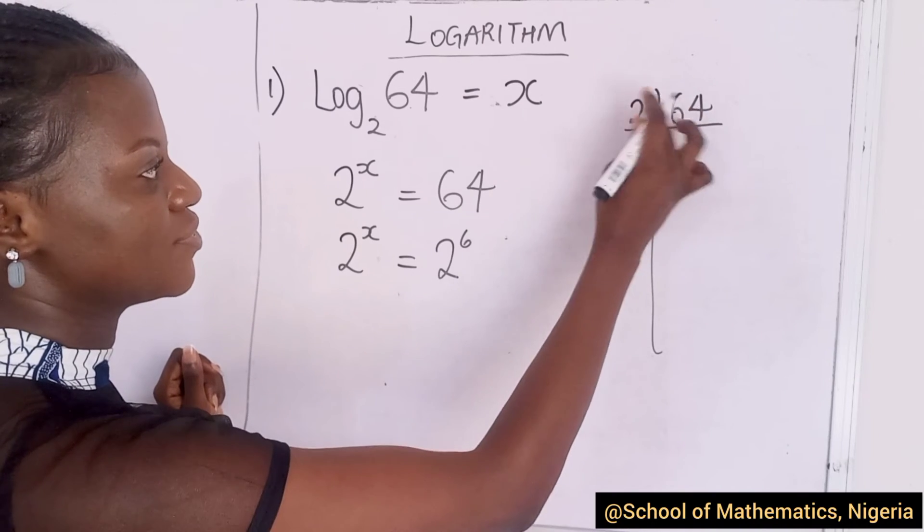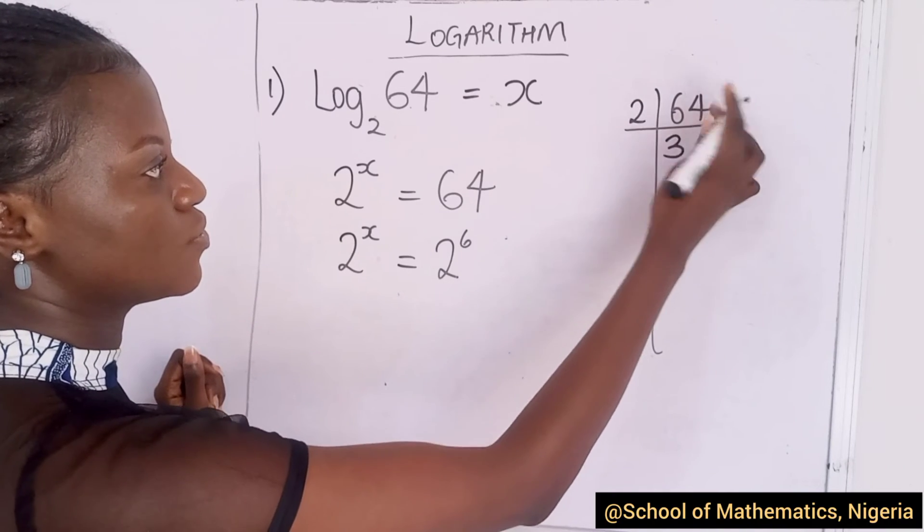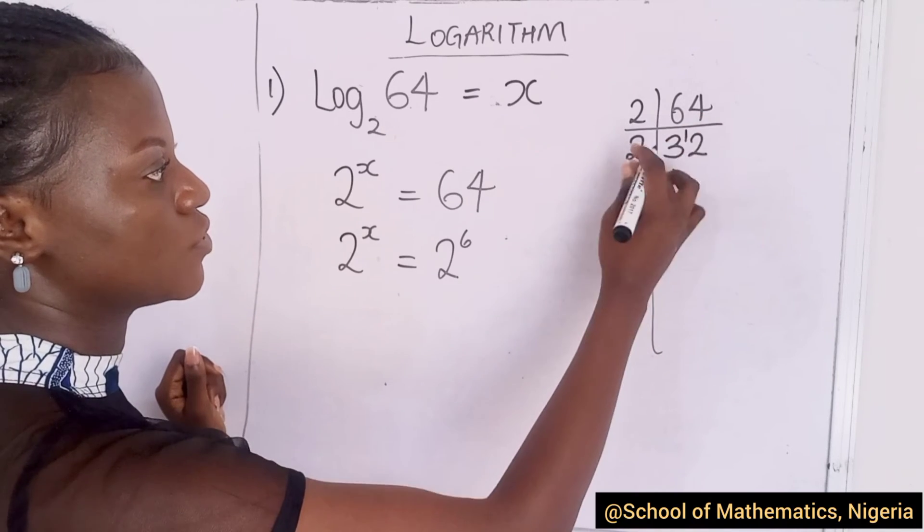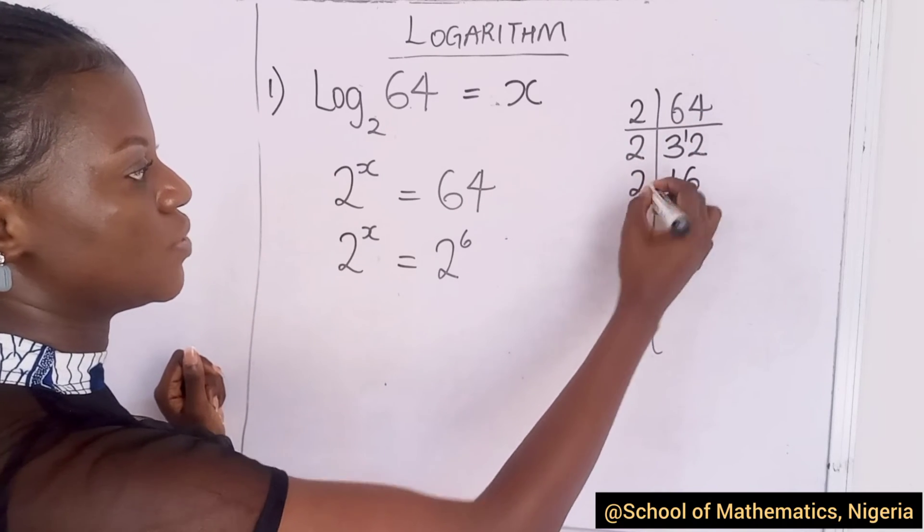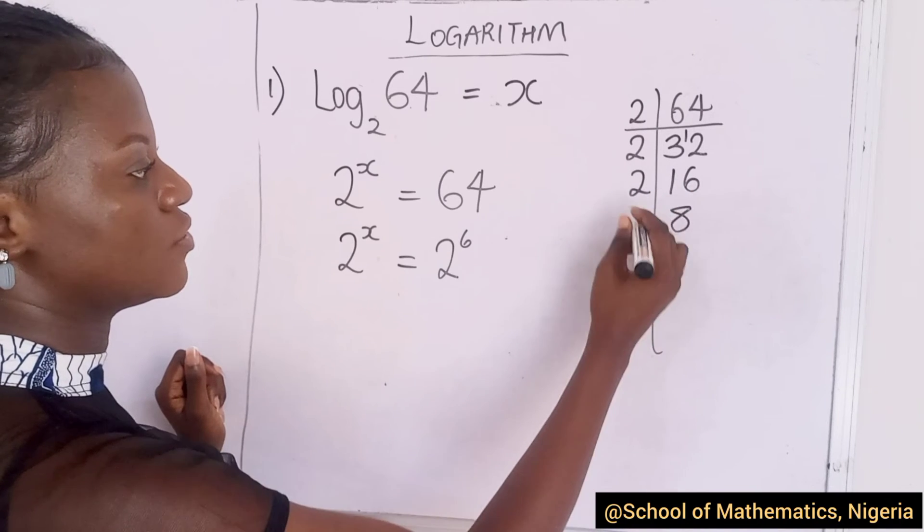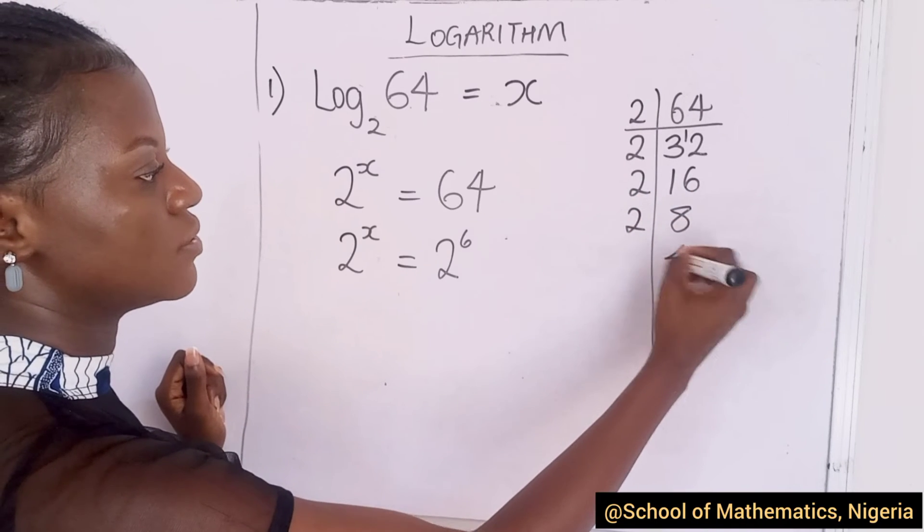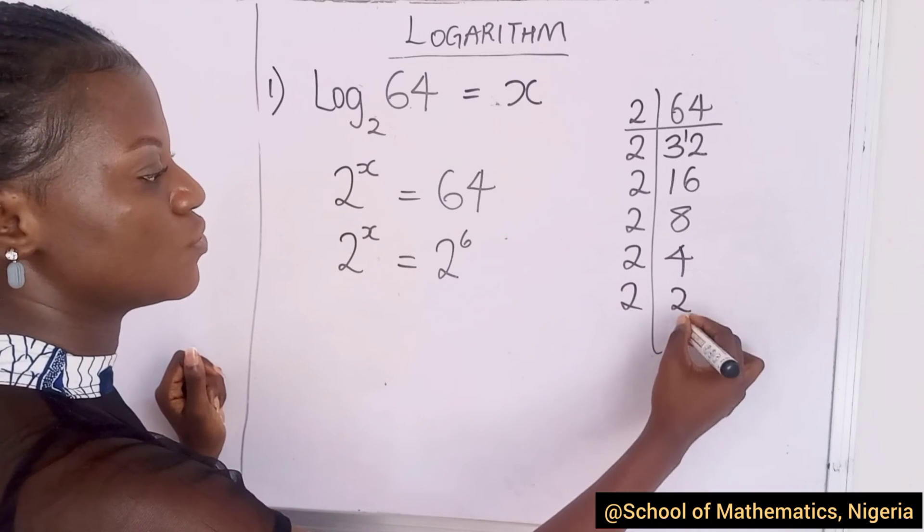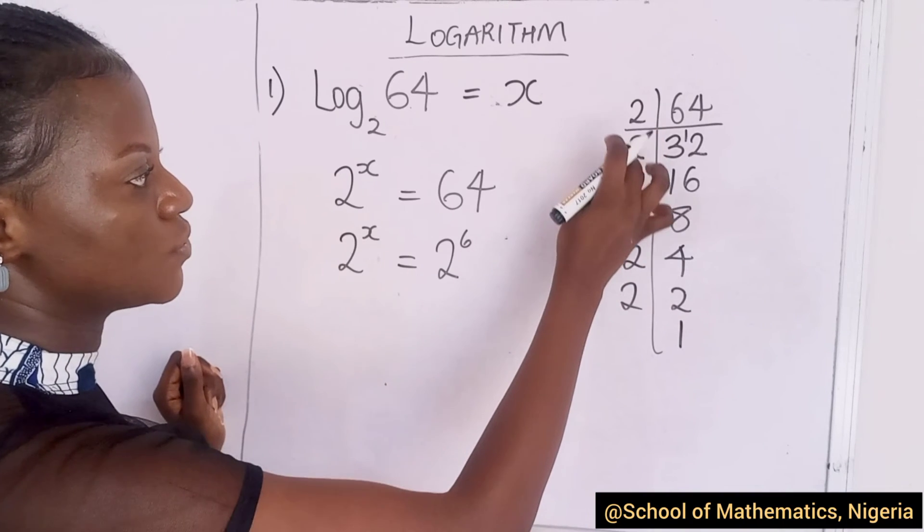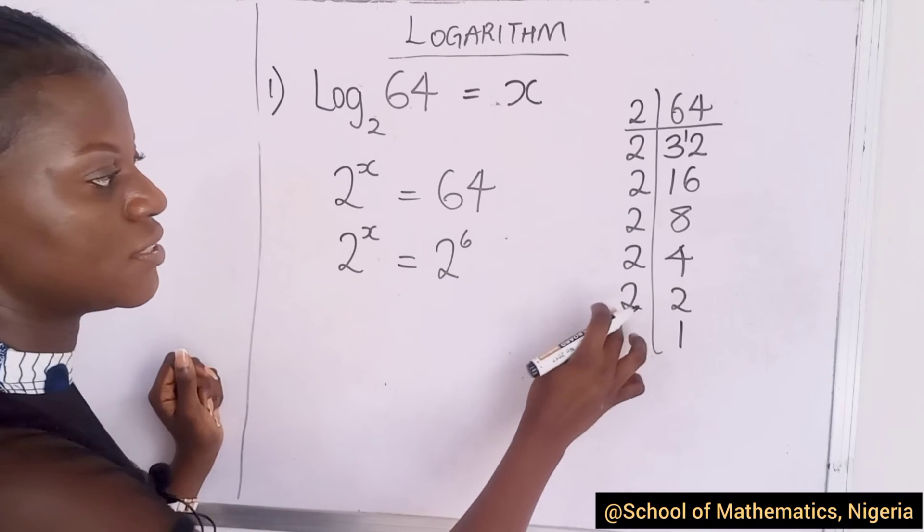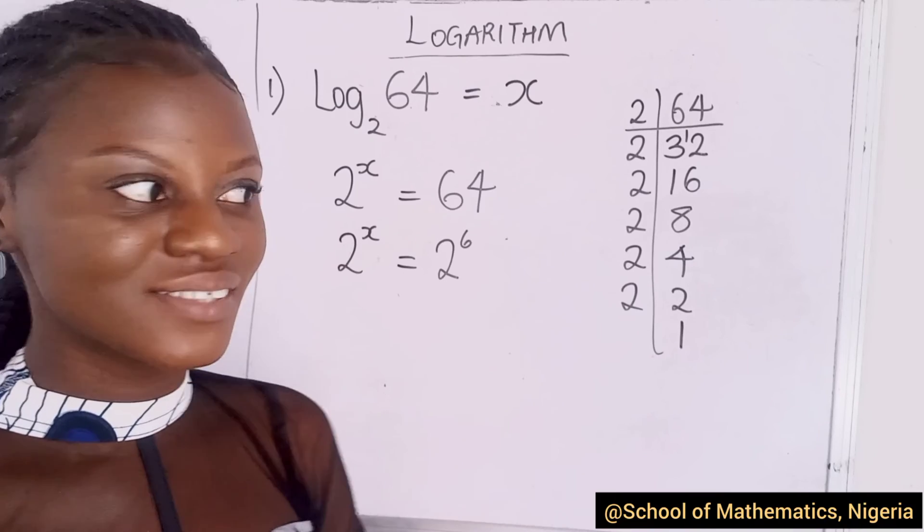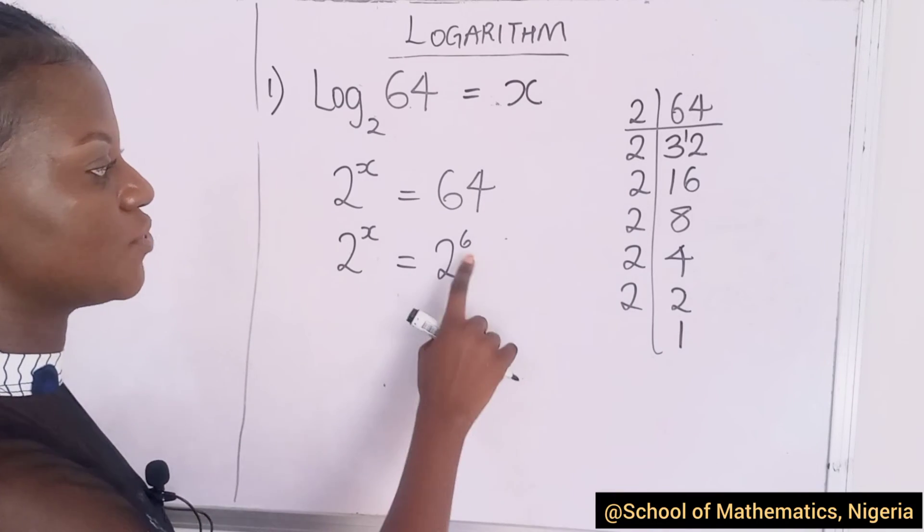Let's do 2 into 64: 2 into 32, 2 into 16, 2 into 8, 2 into 4, 2 into 2, then 1. So, you have 1, 2, 3, 4, 5, 6. Do you see how you can get this in case you do not know? So, this is 6 times.